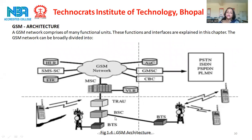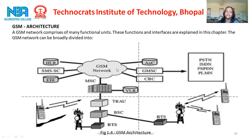Then this information goes to the MSC, which contains VLR, HLR, EIR, AUC, GMSC and other components. After that, this MSC is connected to the switching networks. A GSM network comprises many functional units; these functional units and interfaces are defined within the architecture.